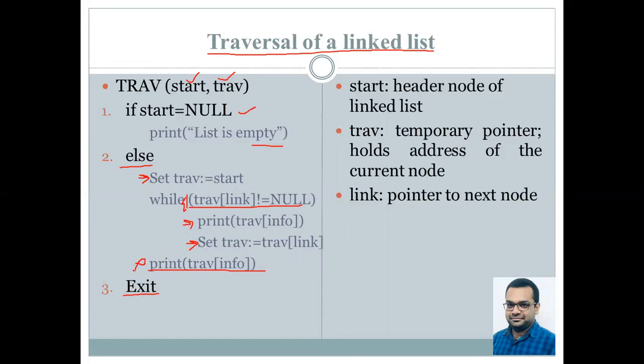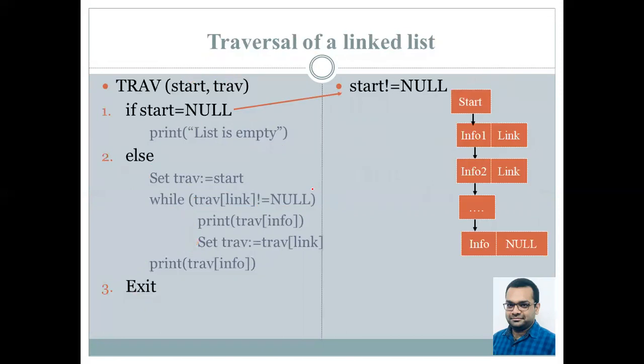However, as we all know from our previous videos, while loops are very costly in a program. So we are saving essentially one iteration by using temp's link not equal to null.